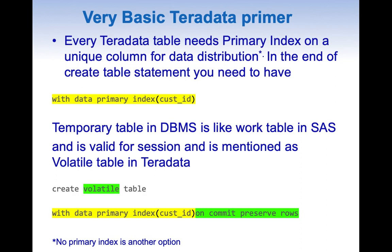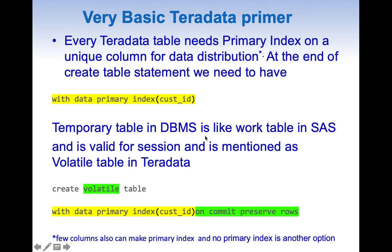Now let us have a very basic Teradata primer so that you'll understand the future queries. Every Teradata table needs a primary index on a unique column for data distribution. To have a primary index, at the end of the CREATE TABLE statement we need to add: WITH DATA PRIMARY INDEX (column_name).